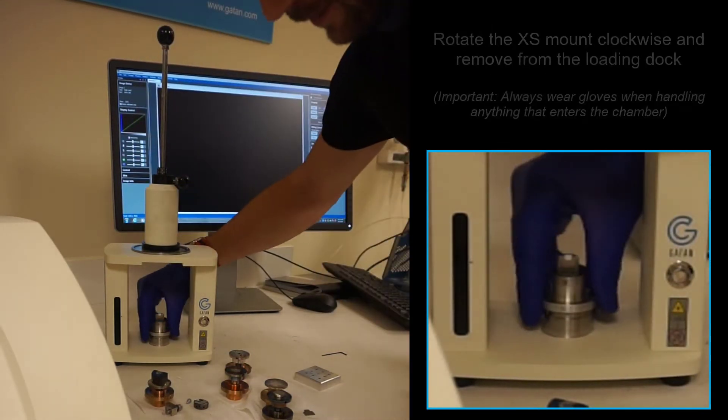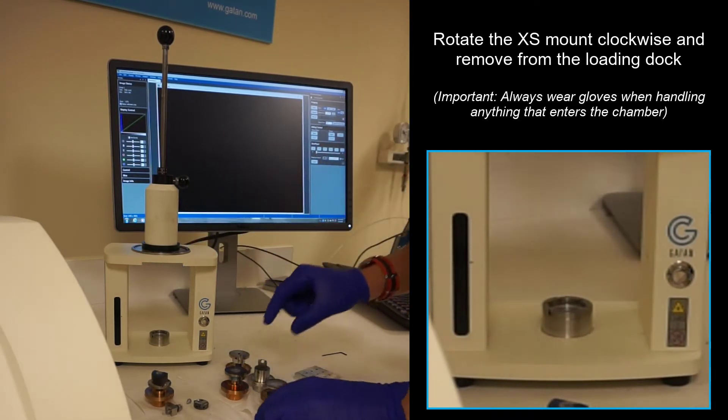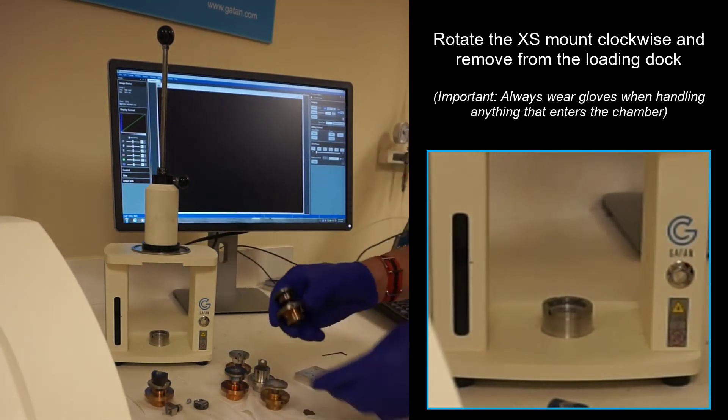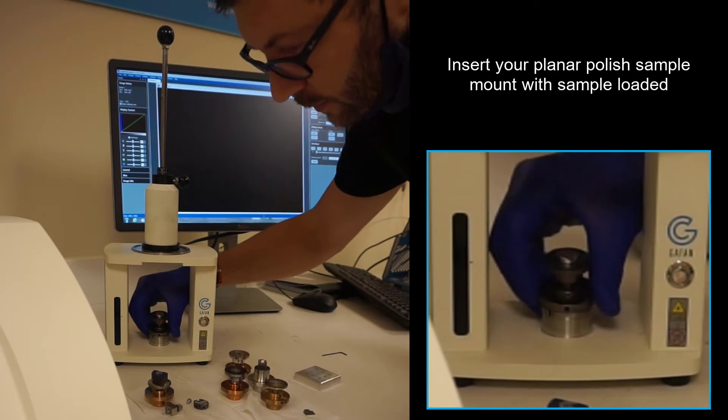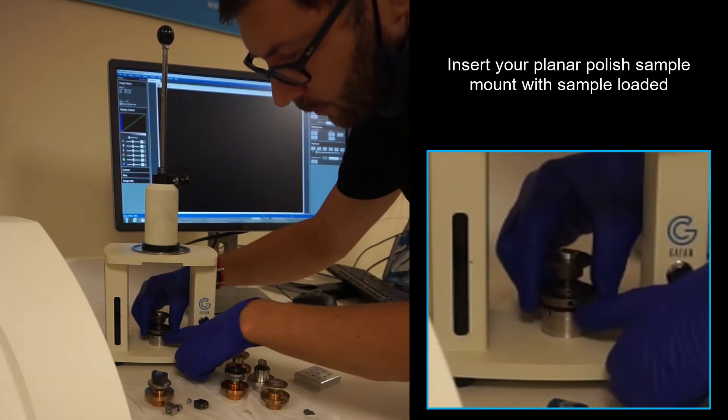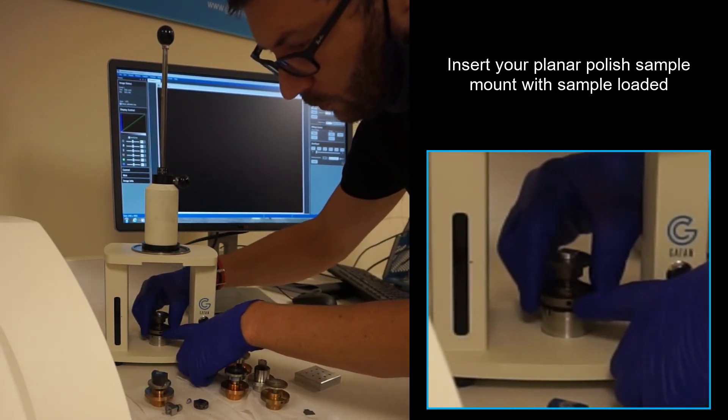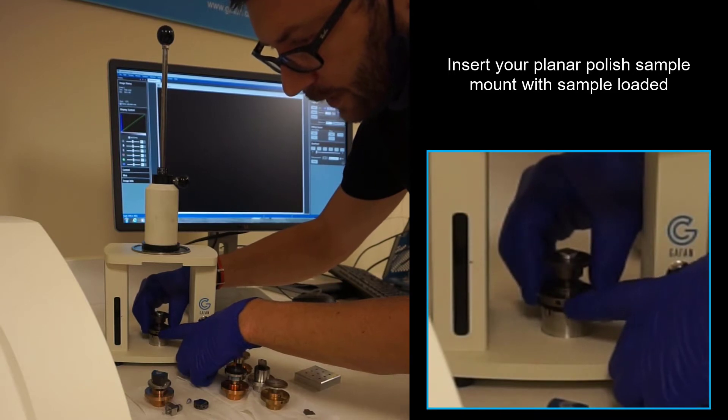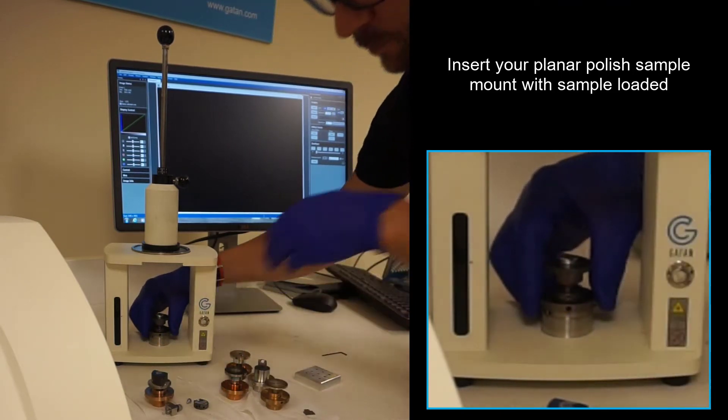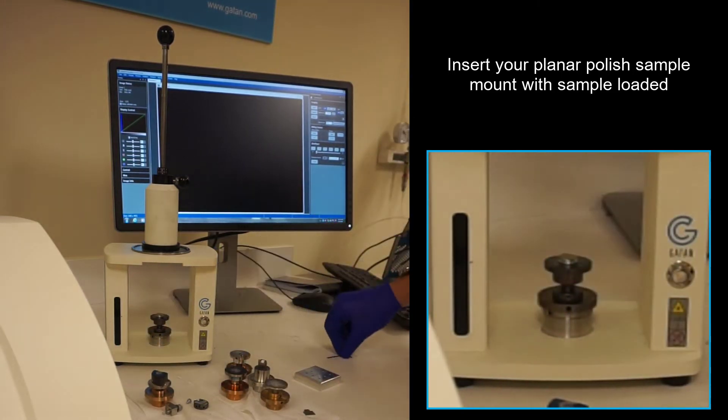Now that we're done aligning, I will put in my sample that I would like to polish. This little hole goes in the front, rotate until it falls in place, and then rotate back to zero.